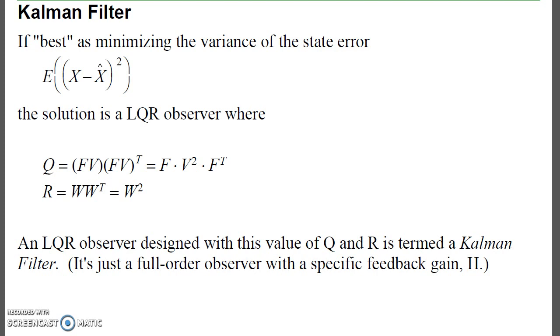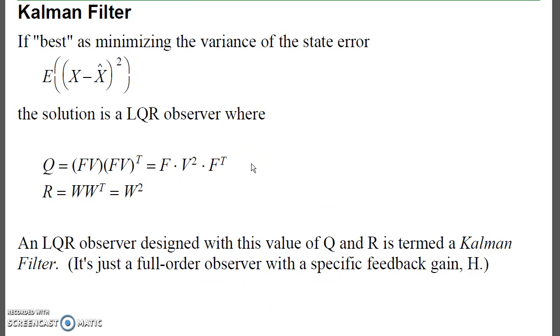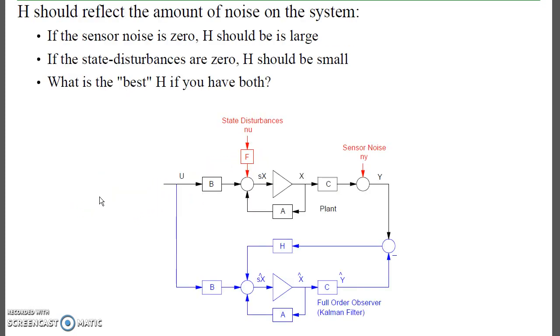It turns out the solution to that is use a very specific Q and R. Q is just your F V times F V transpose. And recalling what those are, that's the input matrix F, times the amplitude of the disturbance. My R matrix is W W transpose. And going back, W is the sensor noise, the standard deviation of sensor noise.